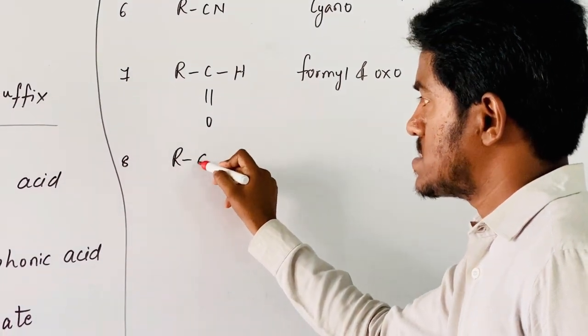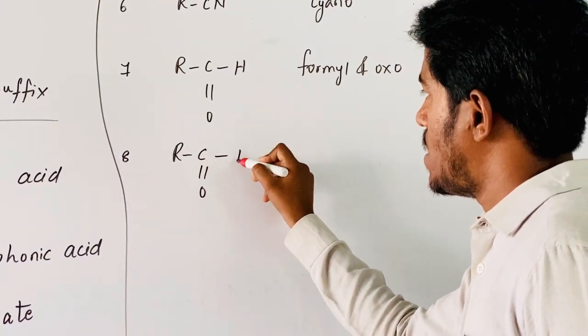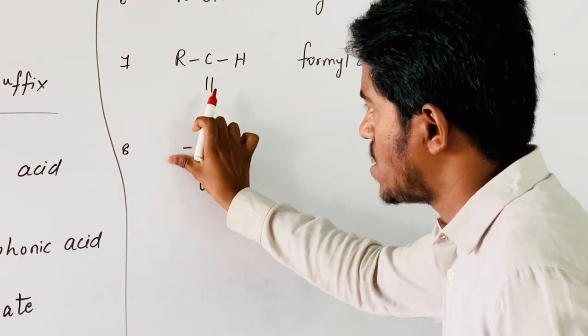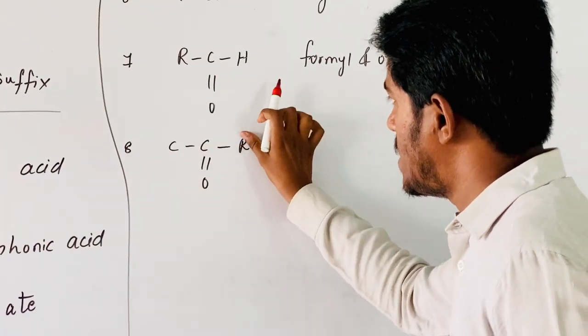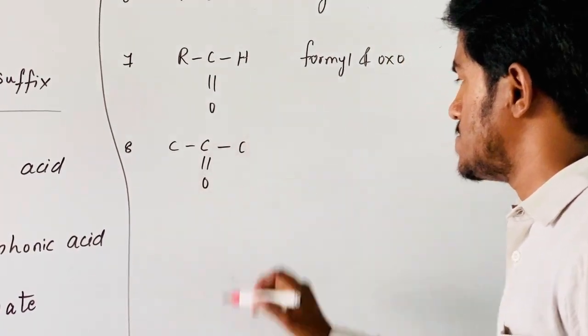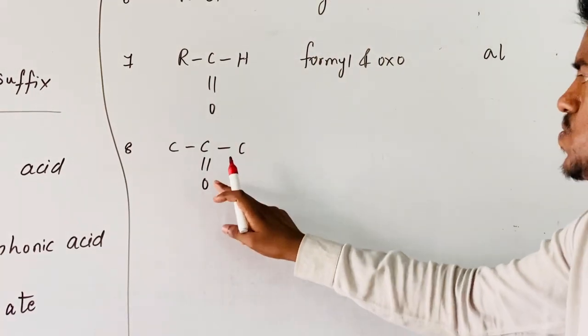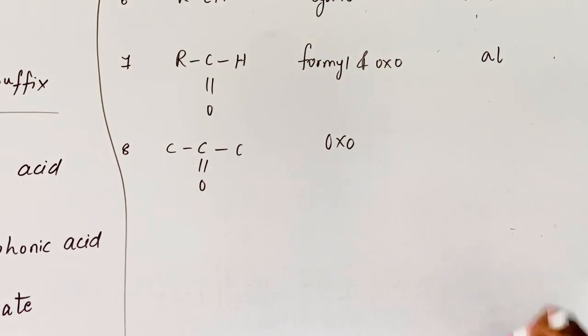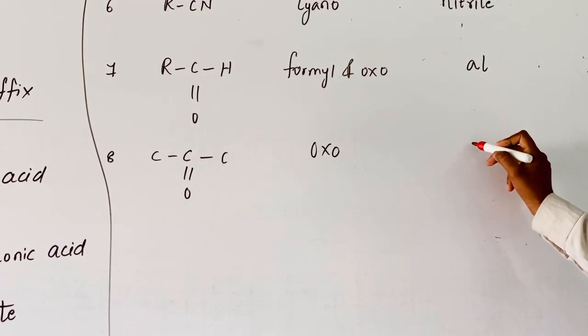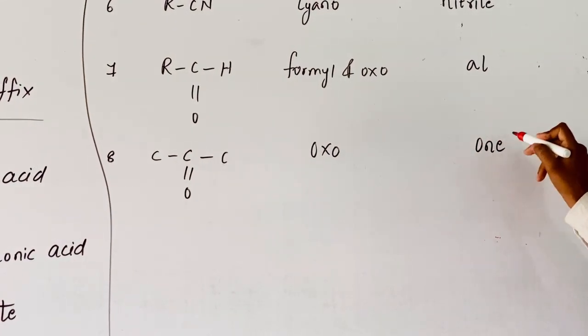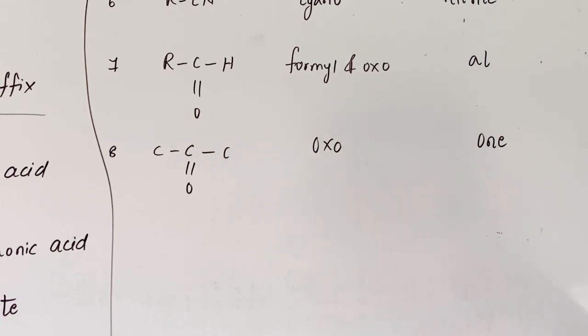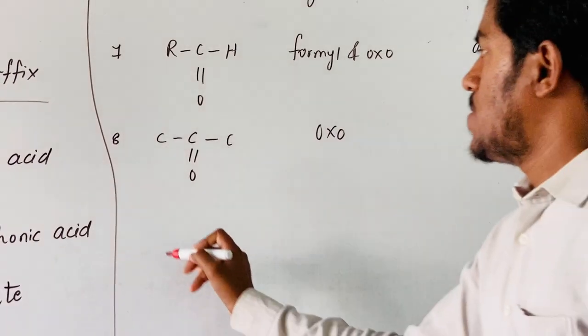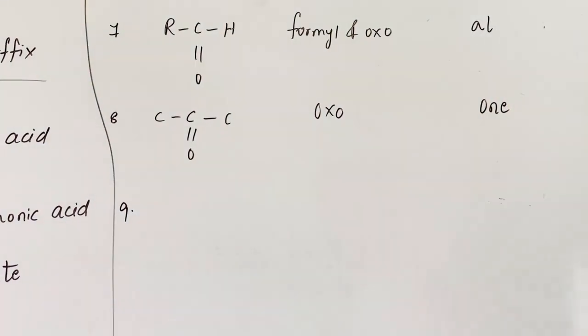Coming to the eighth one, that is R-C-O-R'. Now here R is carbon chain linked to R prime, also carbon chain linked. C=O is oxo as secondary prefix, and secondary suffix is on or ketone.